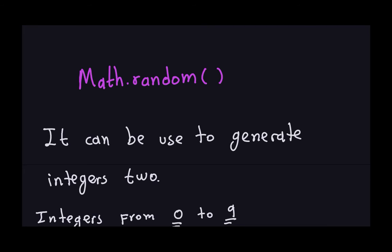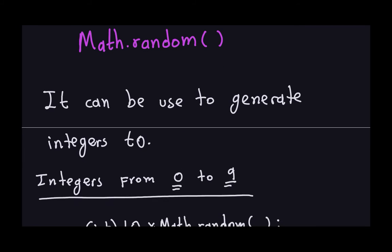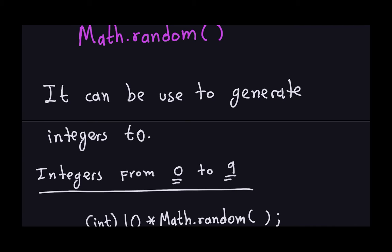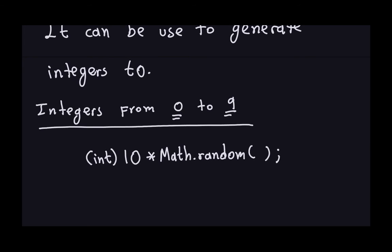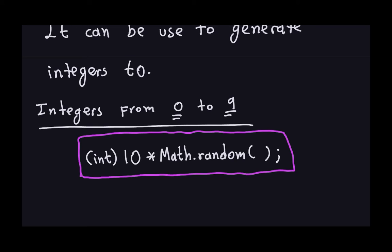I had to interrupt the video because I need to mention something important: this Math.random() method can also be used to generate integers. The output is a double, but if you use it properly you can generate random integers in whatever interval you want. Let's look at this in more detail.